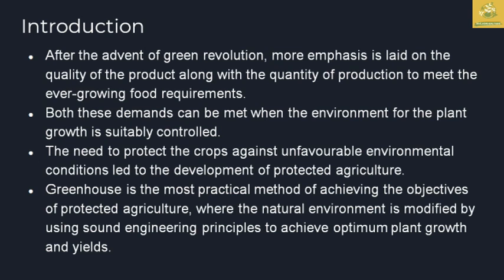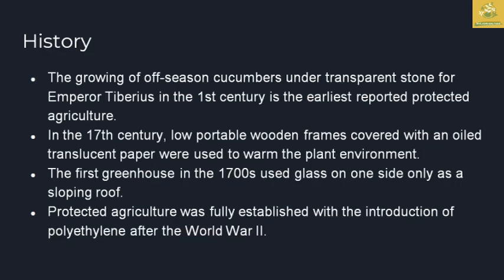Greenhouse technology is embraced for making good quality products with sufficient quantity of production to meet ever-growing food requirements. Both these demands can be met with environmentally suitable cultivation for plants. Crops need to be protected against the adverse environment, which is a big challenge, and so productive agricultural structures were developed — that is where greenhouse technology takes place. The main objective is productive cultivation, where the natural environment is modified for optimum plant growth and yields.